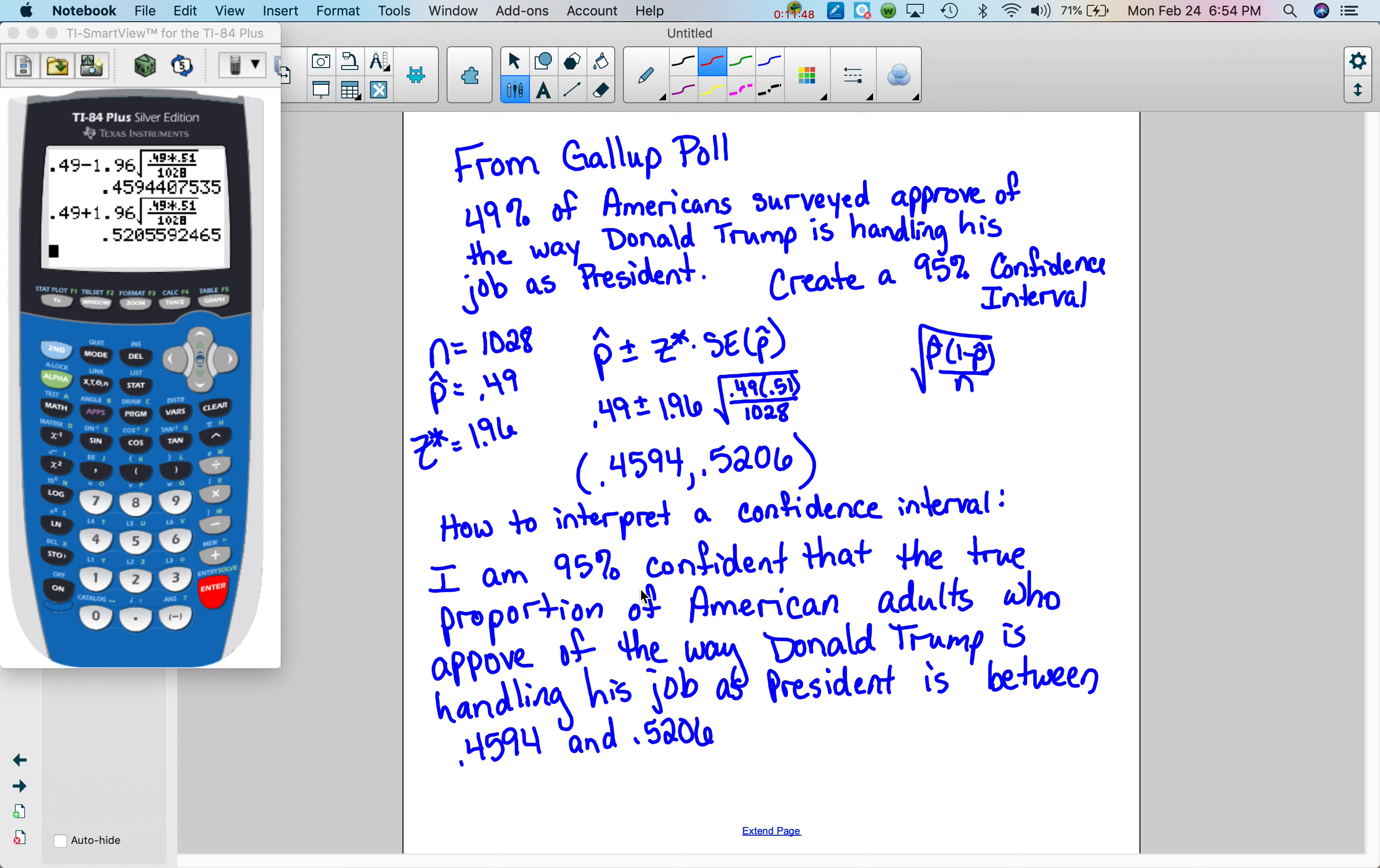Really, this is like a fill in the blank. I am blank confident that the true proportion of, and then you're going to be adding whatever your context is here, so all of this that I'm underlining is your context, is between, and then you're going to write in what you got for your confidence level. Everything else is going to be true. You can say for every confidence interval you interpret, you're just going to fill in the blanks so you can make it applicable for your problem.